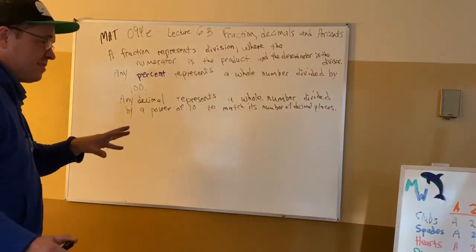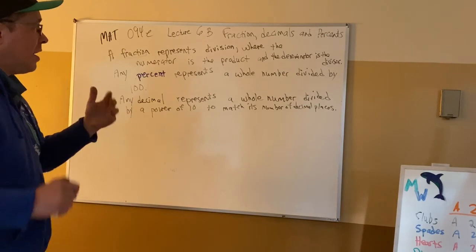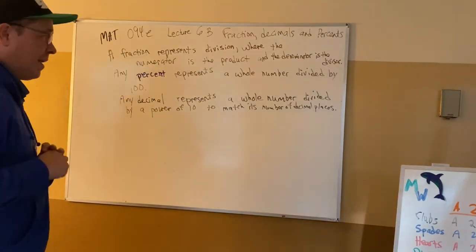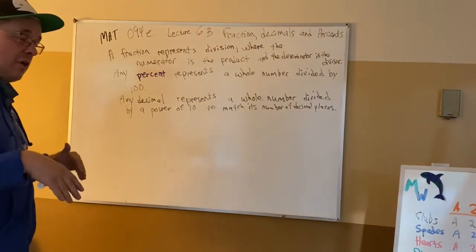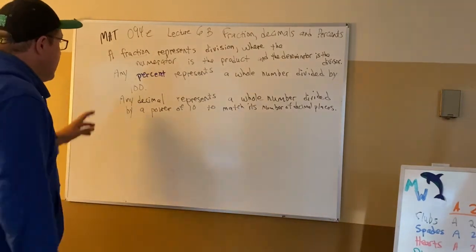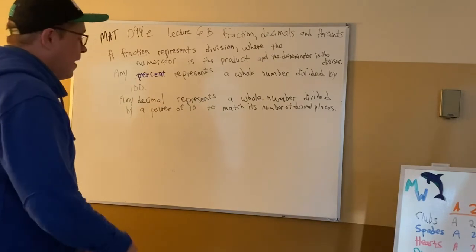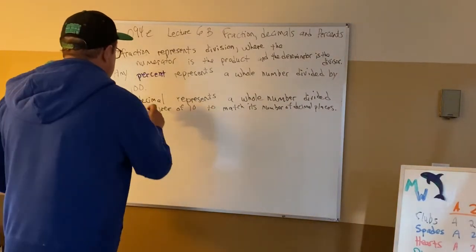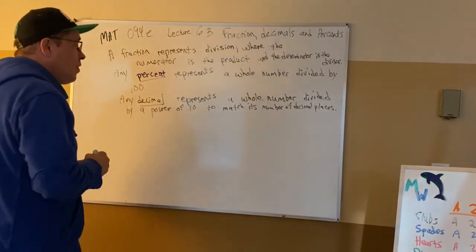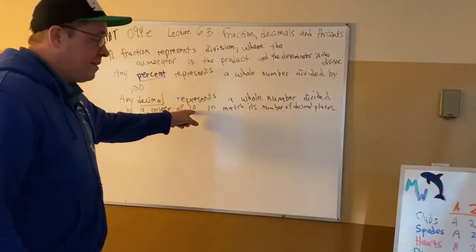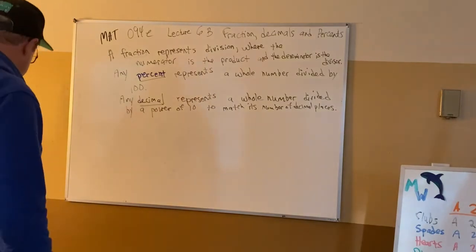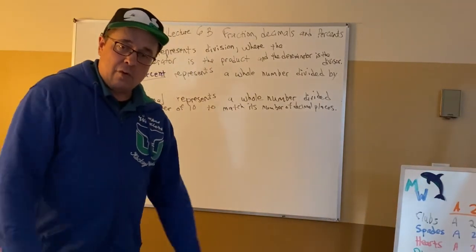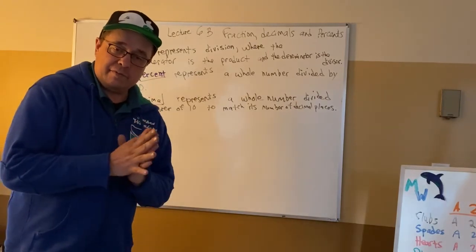A fraction represents division — that's the key. The numerator is the product and the denominator is the divisor. You start with the numerator, divide by what's in the bottom, whether it's bigger than one or smaller than one — an improper or proper fraction. Any percent represents a whole number divided by a hundred, and then it turns into a decimal where any decimal represents a whole number divided by a power of 10, to match its number of decimal places. We have 10 fingers — that's why we have 10 for our decimals.